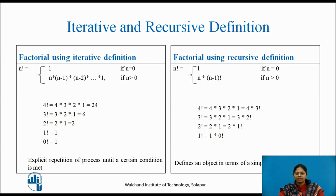To find 2 factorial: 2 is multiplied to 2 minus 1, that is 1, which results to 2. In short, we can see that the iterative process gives the explicit repetition of a process until a certain condition is met. In this example, the repetition is done till 1 is reached.